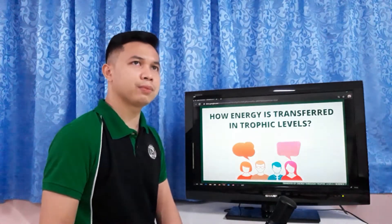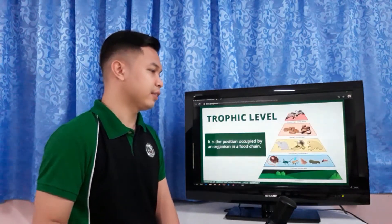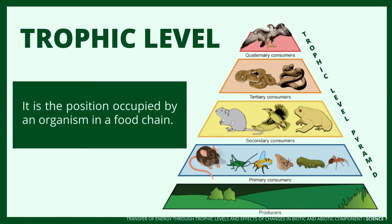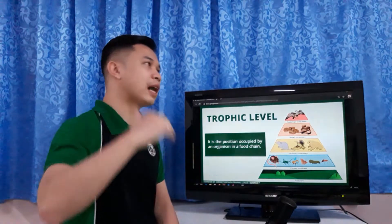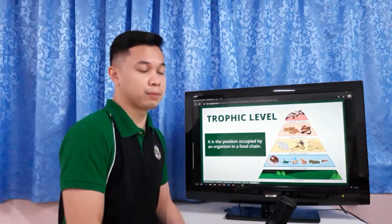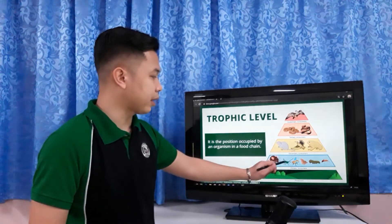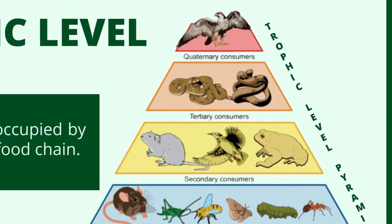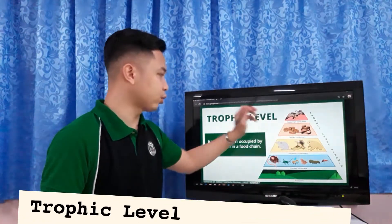What exactly is a trophic level? A trophic level is the position occupied by an organism in a food chain — its position in terms of how much energy it needs to survive. We have producers, primary consumers, secondary consumers, tertiary consumers, and quaternary consumers. These form what we call the trophic level pyramid.